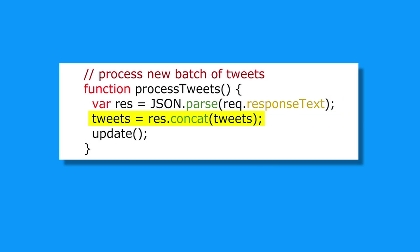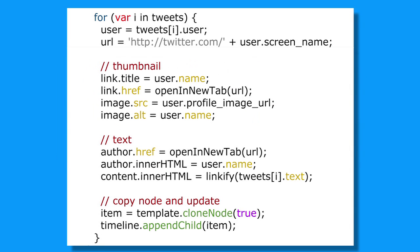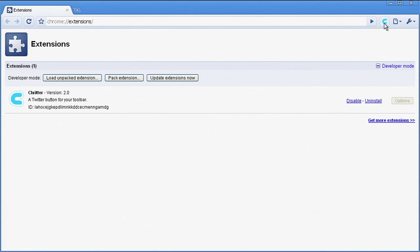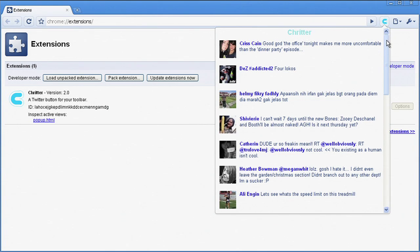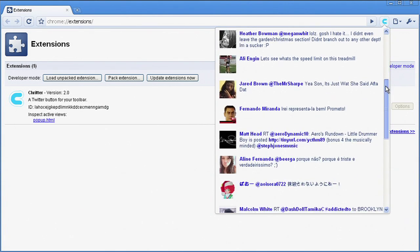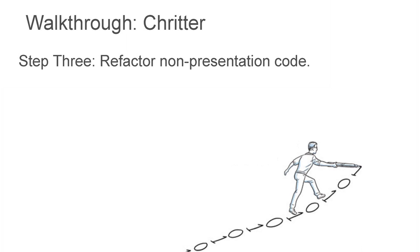The processing function deserializes the incoming JSON using V8's built-in JSON support, and stores the result in an array. Iterating through the array of tweets, the update function assigns each template attribute, and appends the marked-up tweet to the popup. Our extension has a lot more going on now, with a polished UI and the most recent public tweets to show off. Our implementation isn't ideal, though. As a last step, let's improve the extension's performance and functionality by refactoring our code.